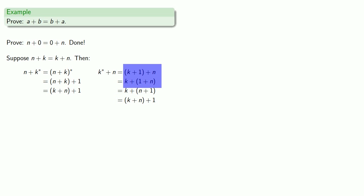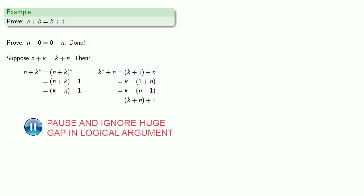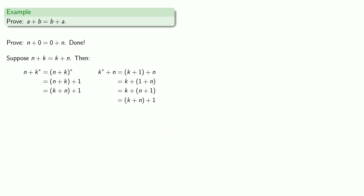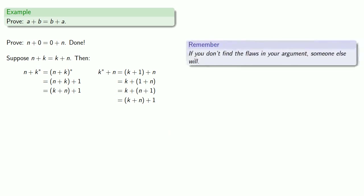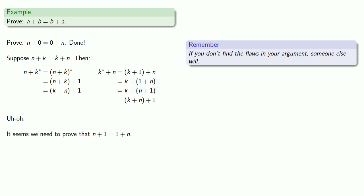So we're allowed to make this regrouping. But again, if you don't find the flaws in your argument, someone else will. Remember, we're trying to prove commutativity, but here we used the commutativity of one and n. So it seems we need to prove that n plus one is the same as one plus n.